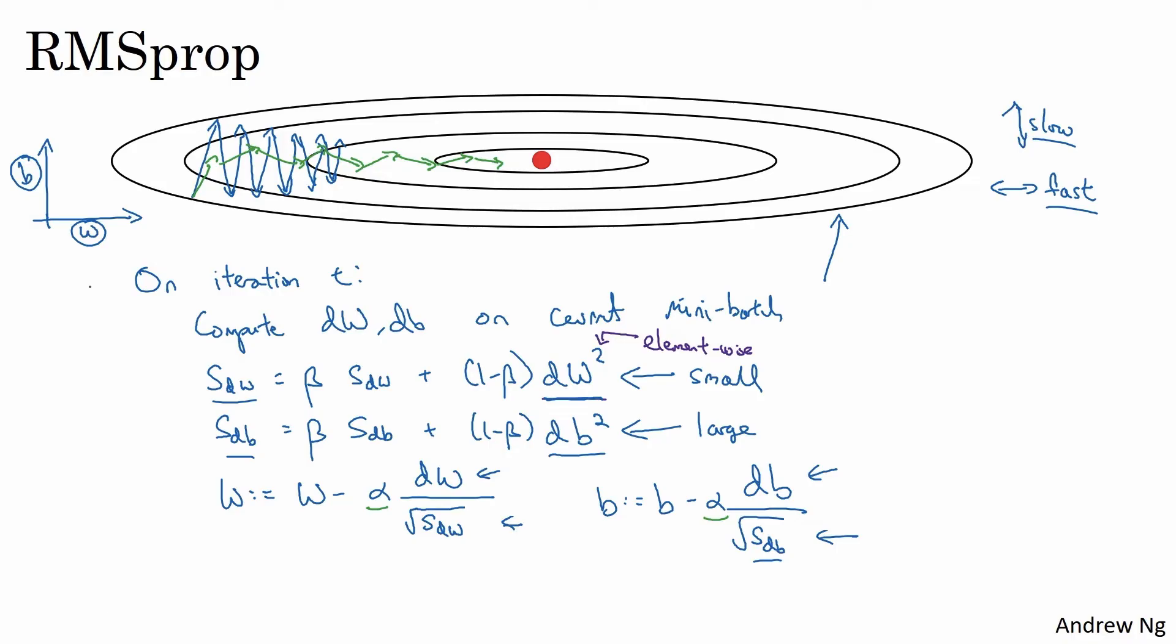Now, just for the sake of clarity, I've been calling the vertical and horizontal directions b and w just to illustrate this. In practice, you're in a very high dimensional space of parameters. So maybe the vertical dimensions where you're trying to dampen oscillations is some set of parameters,